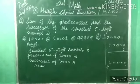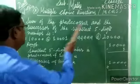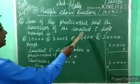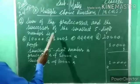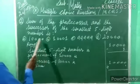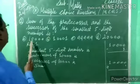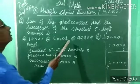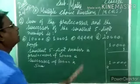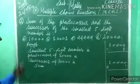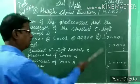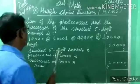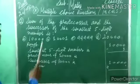What is given: sum of the predecessor and the successor of the smallest five-digit number. Options: A) ten thousand, B) ten thousand one, C) ninety-nine thousand nine hundred ninety-nine, D) twenty thousand.